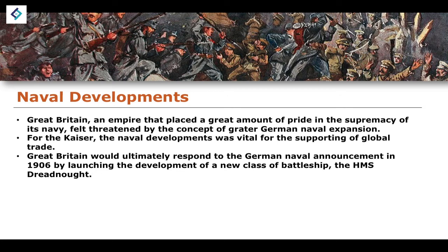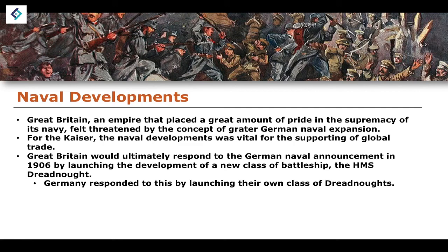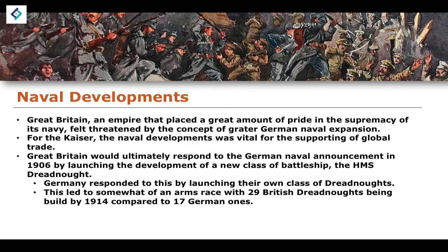Great Britain ultimately responded to the German naval buildup in 1906 by launching the development of a new class of battleship, which became known as the HMS Dreadnought. To this day, the term 'Dreadnought' is used colloquially for a large battleship, but originally the HMS Dreadnought was a specific class developed in 1906. In response, Germany introduced their own class of Dreadnoughts. So we see in the early 1900s an arms race in naval capacity, with British Dreadnoughts reaching 29 by 1914 compared to 17 for Germany — meaning Britain won the naval supremacy battle, though not overwhelmingly so.